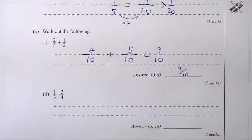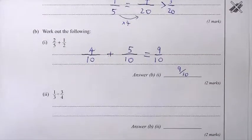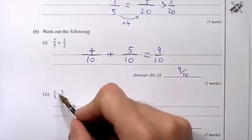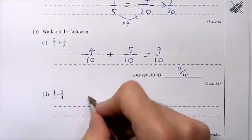1 third divided by 3 quarters. Now, dividing fractions is where you have to flip over the second fraction and change the divide sign into a times sign. So let's do that.